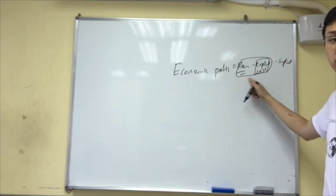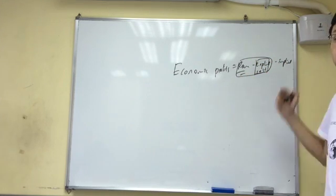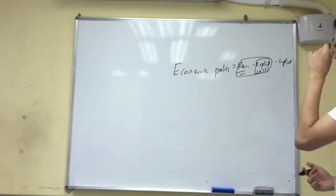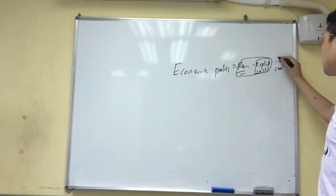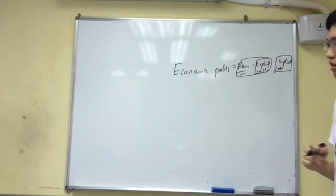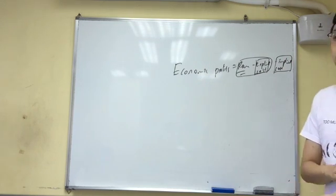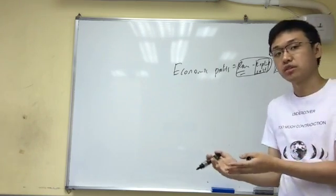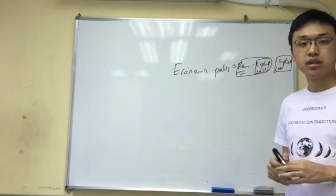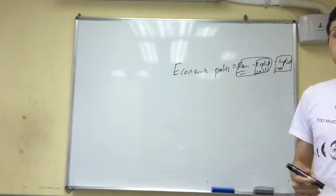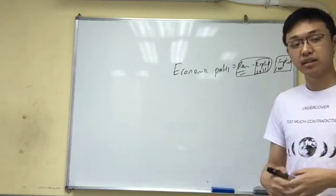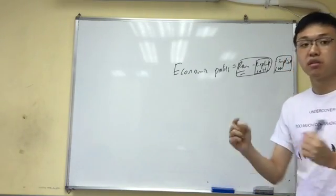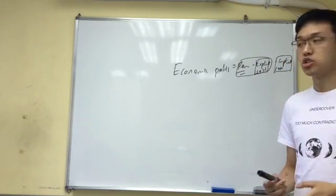Revenue minus explicit cost is what normal people consider profits — this is also called accounting profits, and it shows up in the profit and loss statement of firms. Implicit cost means opportunity cost. In this case, the opportunity cost of a business is how much money can be made in an alternative business. Let's say you're selling apples — your implicit cost would be the profits you could have earned selling oranges instead.